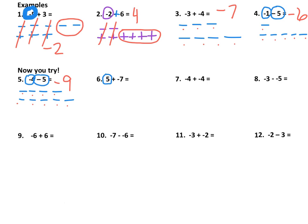In this example, we have positive 5 and we have negative 7. These cancel, cancel, cancel, cancel, cancel. We end up with two negatives left, so it's negative 2.